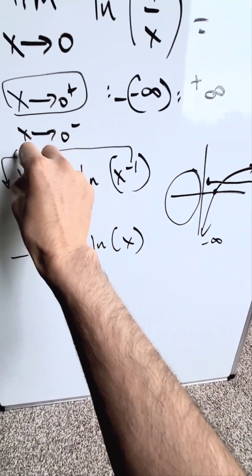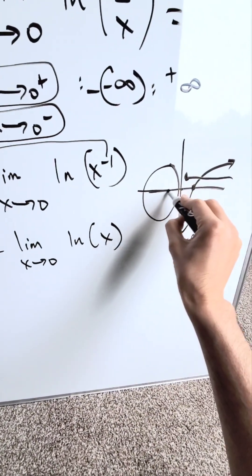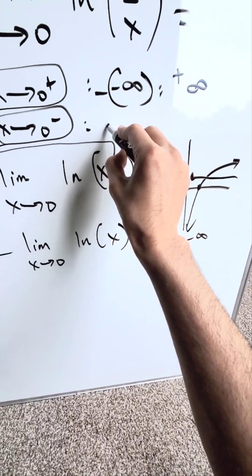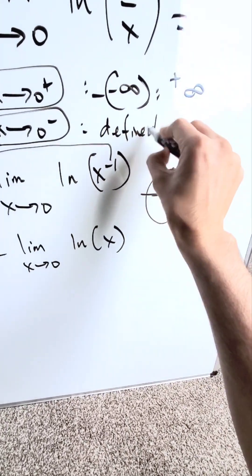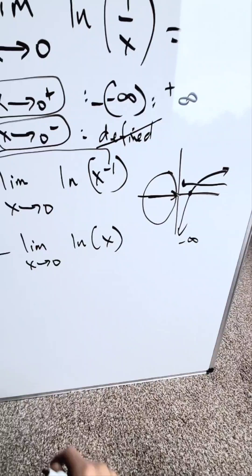For x approaching 0 from the left, there's no extension of the function here. It's not even defined. We'll write is defined, but I'm going to cross it out meaning it's not defined, it's undefined.